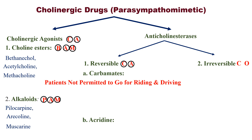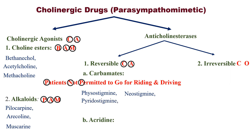For carbamates, remember this mnemonic — patients not permitted to go for riding and driving. The first letters give us: P for Physostigmine and Neostigmine, P for Pyridostigmine, G for Galantamine, R for Rivastigmine, and D for Donepezil.